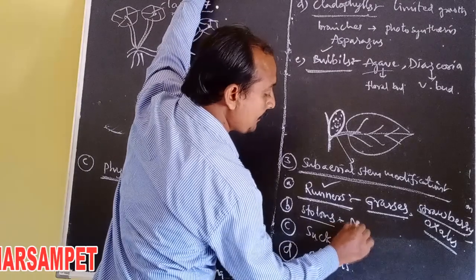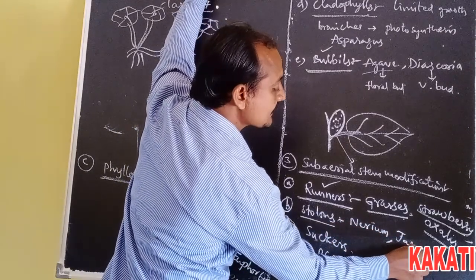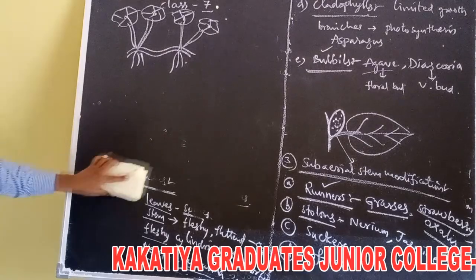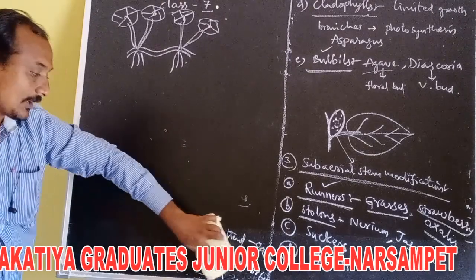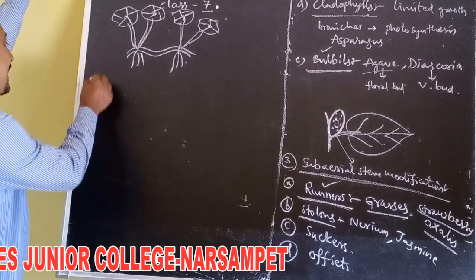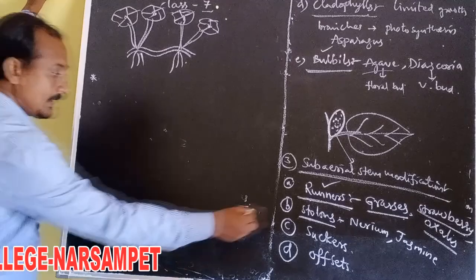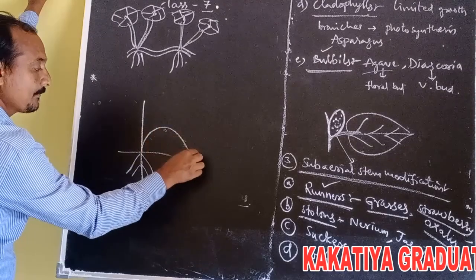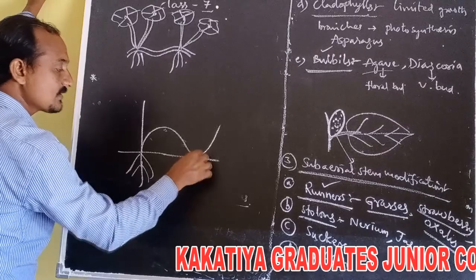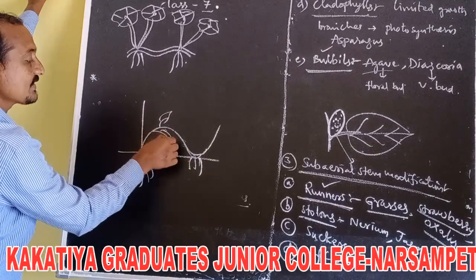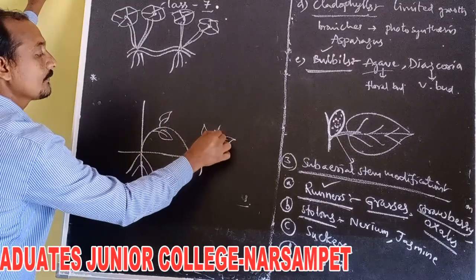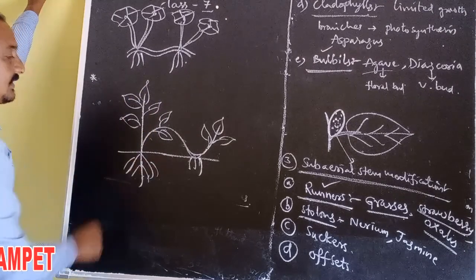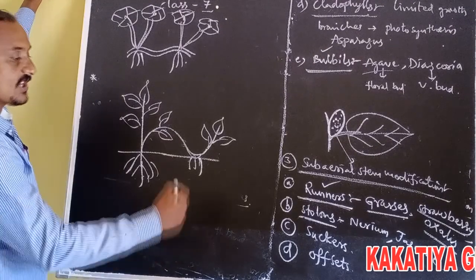Second is stolons. In Nerium and Jasmine, a slender lateral branch develops from the main axis of the stem. These branches grow aerially for some time and then bend obliquely downward to touch the soil, where they produce adventitious roots and develop into a new individual plant. Such types of stems are called stolons. Examples: Nerium, Jasmine, and Rose.